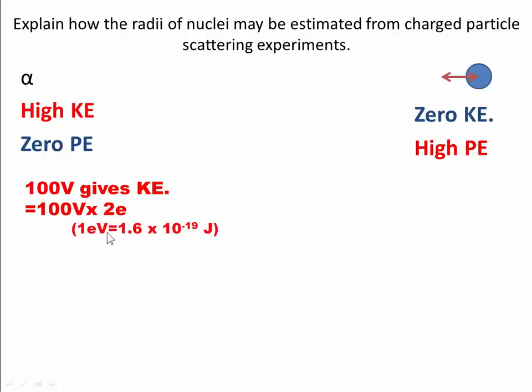You know that 1 electron volt is equal to 1.6 times 10 to the minus 19. So it's going to be 2 lots of 1.6 times 10 to the minus 19 times by 100.